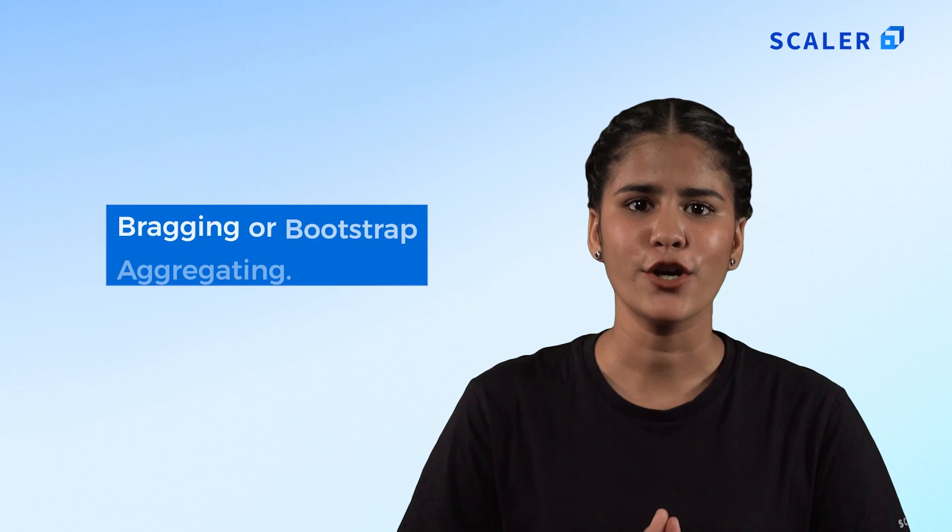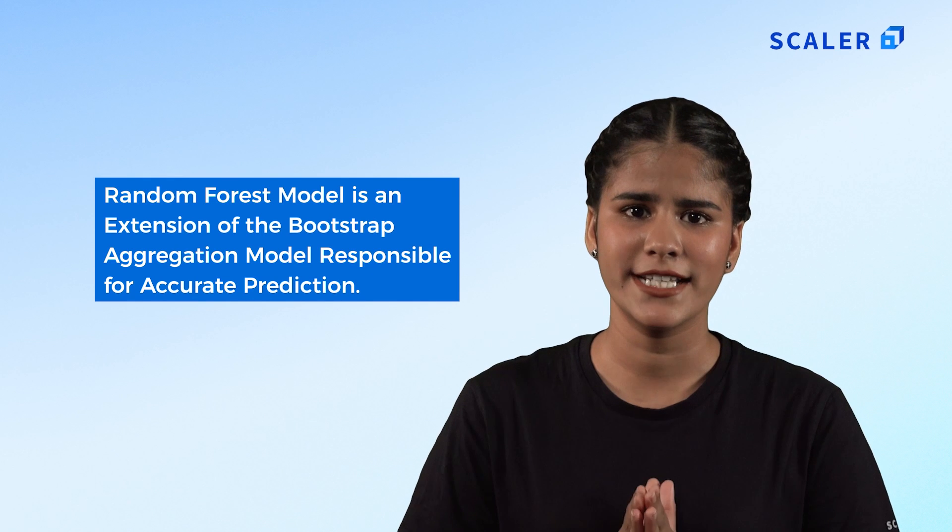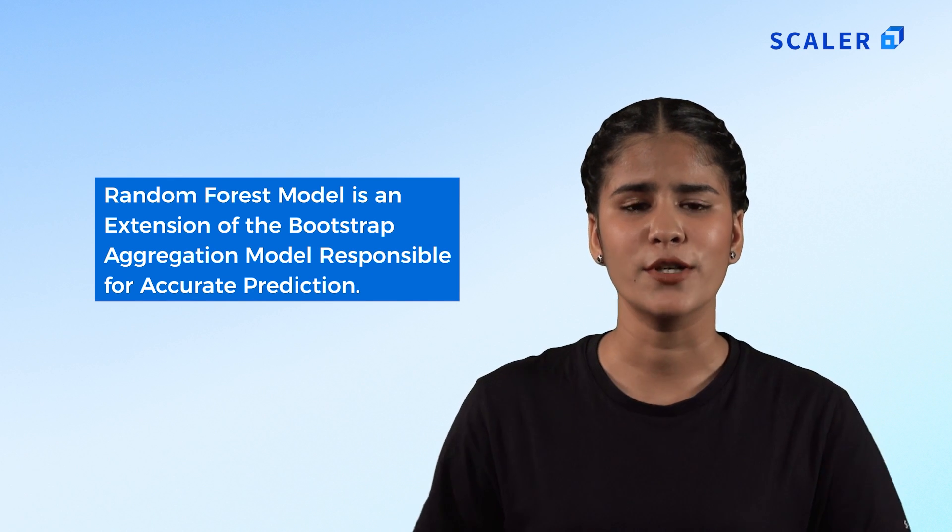Since we have a clear idea of what decision trees and random forests are, it's time to move to our next topic: bagging, or bootstrap aggregating. Bootstrap aggregation, popularly known as bagging, is a machine learning algorithm primarily designed to improve the condition of variance within a noisy dataset. It promotes the stability and accuracy of machine learning algorithms used in regression and classification. The random forest model is considered an extension of the bootstrap aggregation model. Leo Breiman introduced the bagging algorithm in 1996.